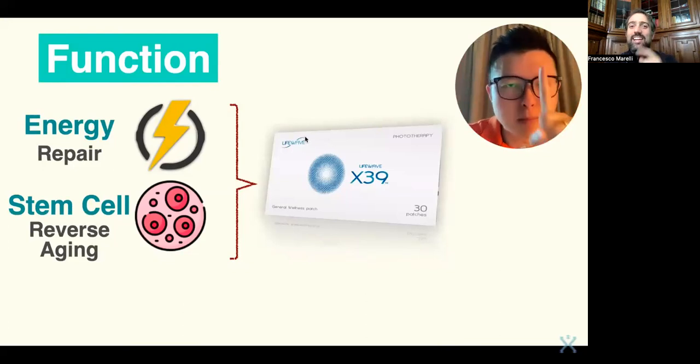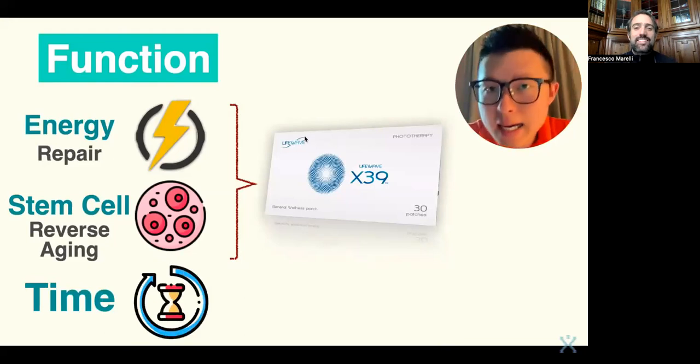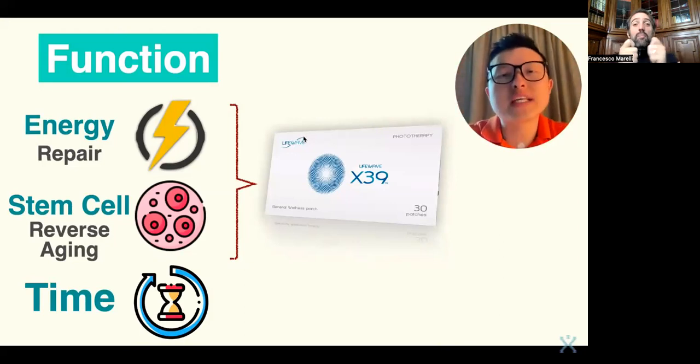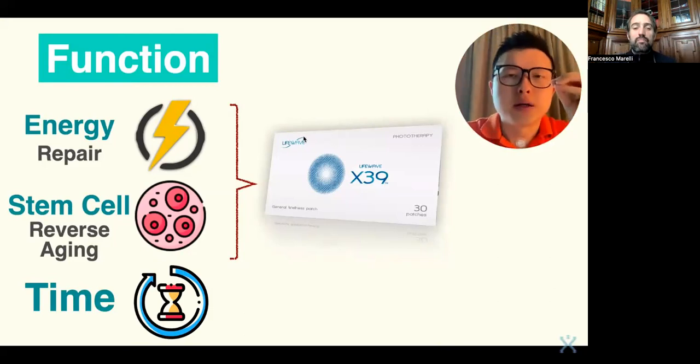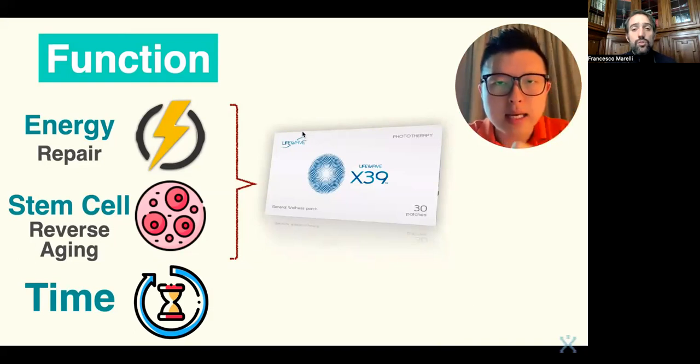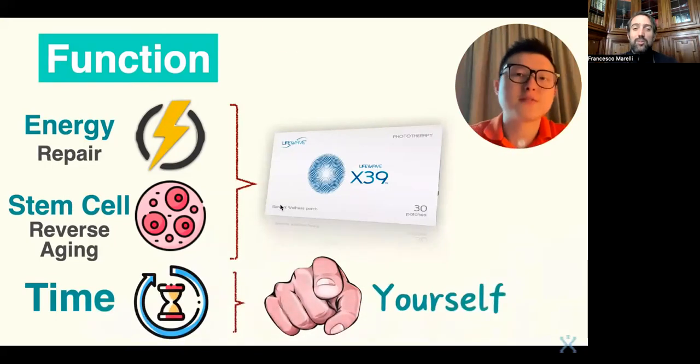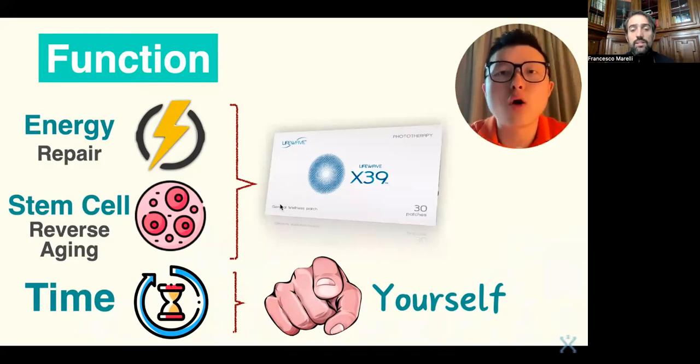But there is still one key element missing. Time. I can give you the best phone. I can give you the best charger. But if you don't give me time to charge the phone, it is impossible to charge the phone. So, who is the person who can give us time to repair these functions? In order to reverse aging, it is you, yourself. No matter how good the product is, we still need to allow some time and also give your body more chance to go into the deeper structures to rejuvenate and reverse age itself.